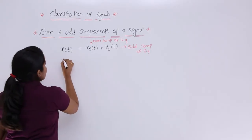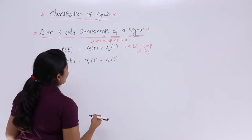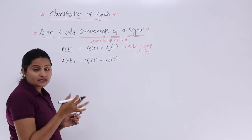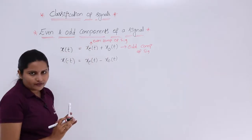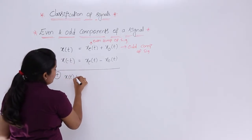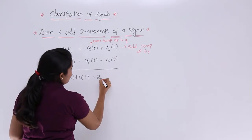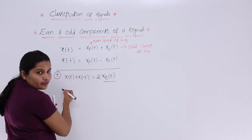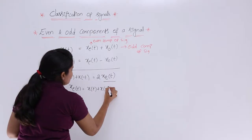Now if you want to represent x(-t), you just need to consider minus in between the even and odd components. If you subtract the odd component from the even component, then you are going to get x(-t). These are the relations of any signal with its reflected version. For example, if you want the equation for x_e(t), you just add these two: x(t) + x(-t) = 2·x_e(t).